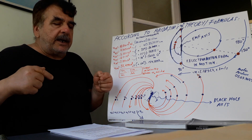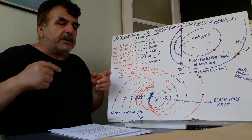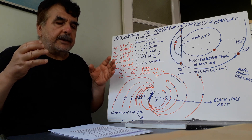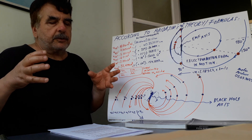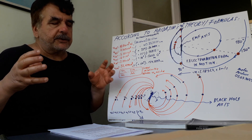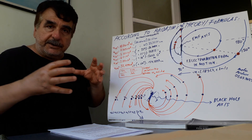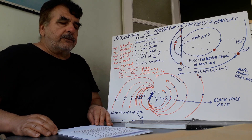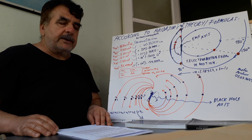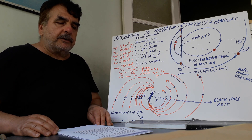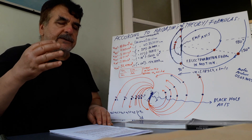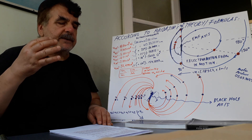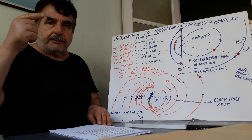And as the distance between the photon and the electron motion form or black hole's axis increases, the photon's linear or orbital velocity increases, and its mass and energy decrease.